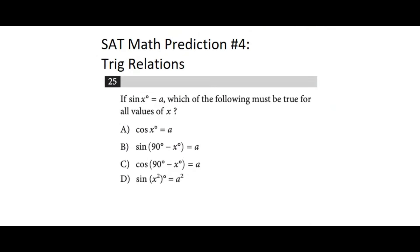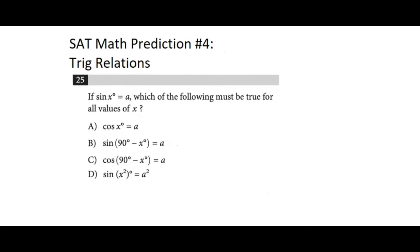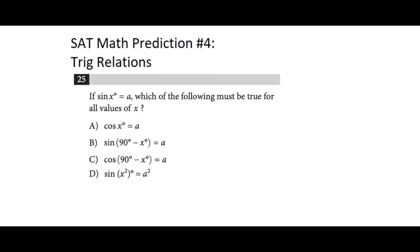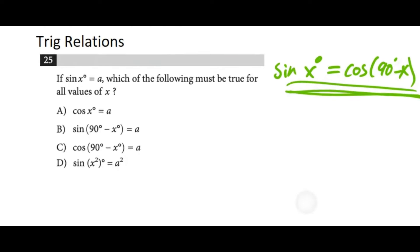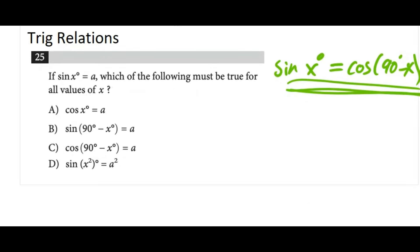We're wrapping up with a trig relations math prediction. What you need to know is that sine and cosine are complements of each other: sine of X degrees equals cosine of (90° − X). The easiest way to solve a problem like this is to memorize that complement relationship. But if you don't, here is a neat alternative approach.